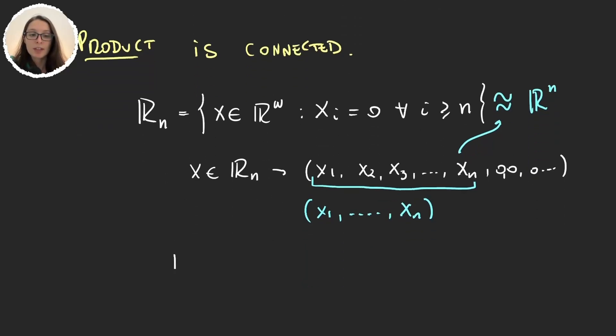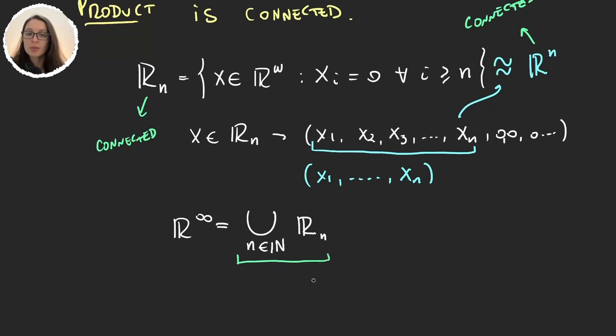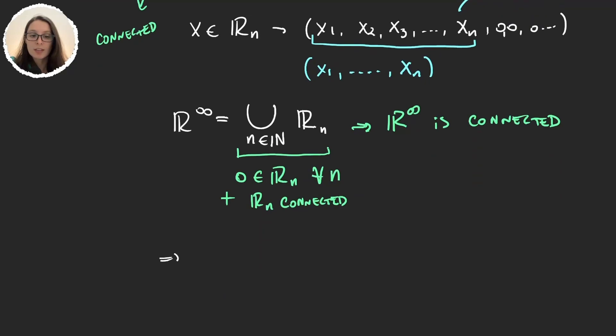And also R infinity, the set of sequences that are eventually 0, is going to be the union over all the natural numbers of R_n. Given that this set is connected, then this other is connected. And so here we have the union of connected sets with at least one point in common, because 0 is in R_n for every n. And given that each R_n is connected, this implies that R_n is connected, and so if R_n is connected then R_n closure is also connected.